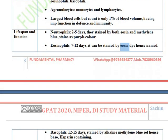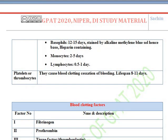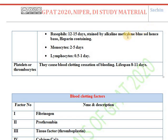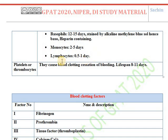Basophils are stained by the basic alkaline methylene blue solution, that's why they are known as basophils. They have a lifespan of 12 to 15 days. Importantly, amongst WBCs, only basophils are heparin-containing cells. Monocytes have a lifespan of 2 to 5 days, and lymphocytes have a lifespan of 0.5 to 1 day.